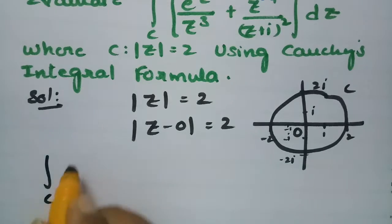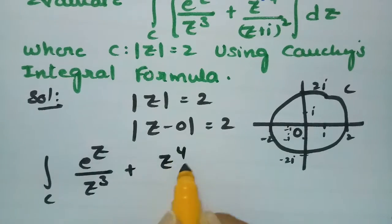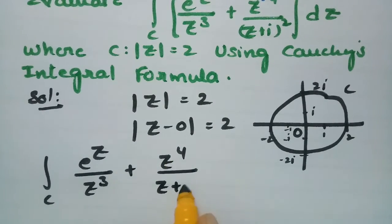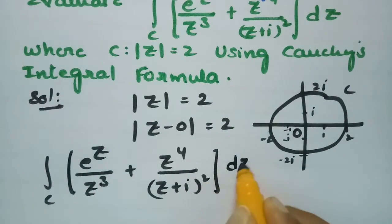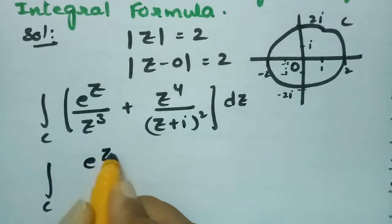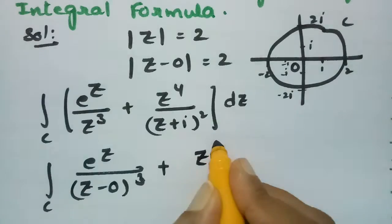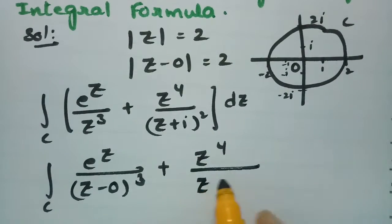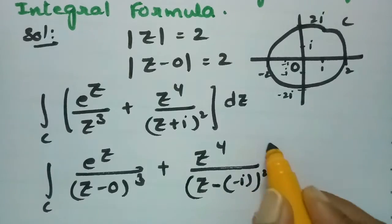The integral to evaluate is e^z over z³ plus z⁴ over (z + i)². I am rewriting this as e^z over (z − 0)³ plus z⁴ over (z − (−i))², to put it in the standard form z − a.